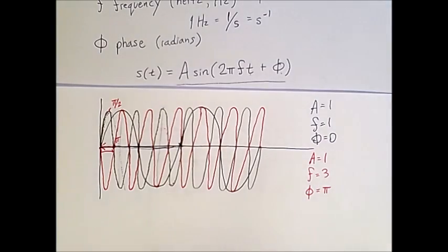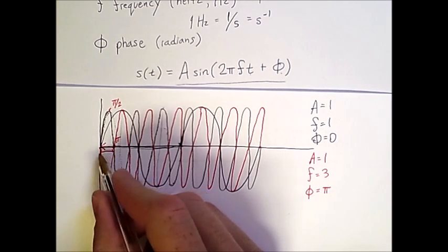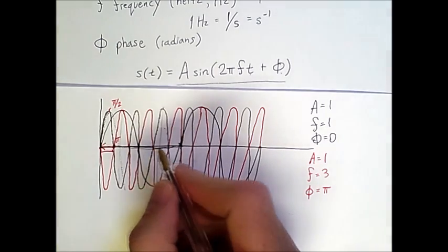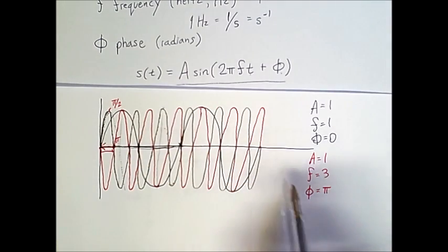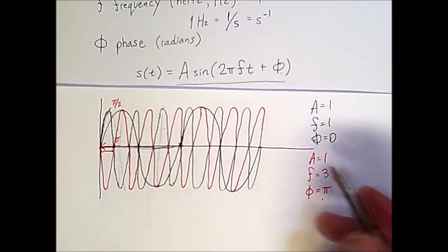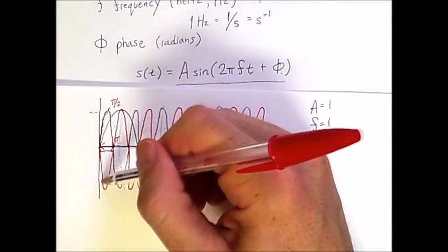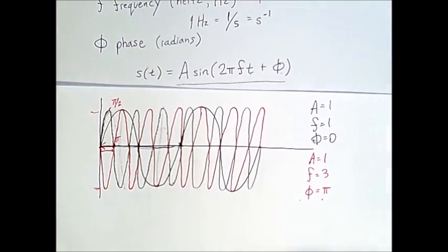So, the major takeaway from this is that a phase of π is not a set length on this axis. What it means to shift the phase by π depends on how compressed or stretched the wave is. In contrast, the amplitude is an absolute quantity, and it simply corresponds to a position on the y-axis. So, that's a bit easier.